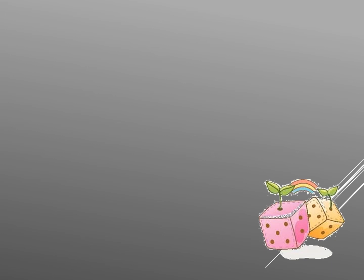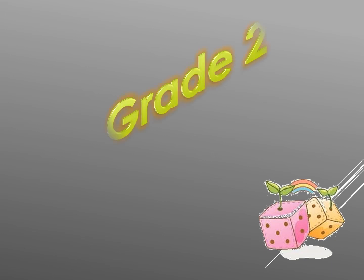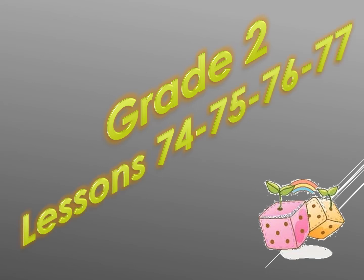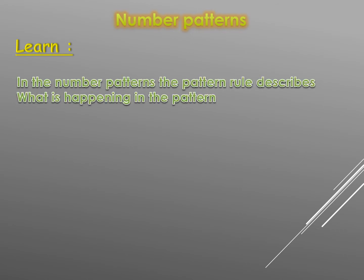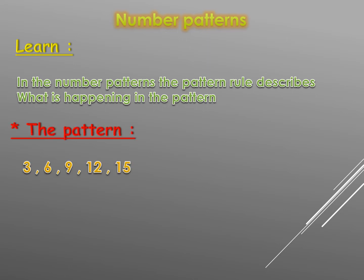Hello, great. Now we have some new lessons, lesson numbers 74 to 77. Number patterns: learn the number patterns. The pattern rule describes what is happening in the pattern. The pattern is three, six, nine, twelve, fifteen. This number is written with a rule. First, you must know if this number is in ascending or descending order.